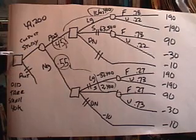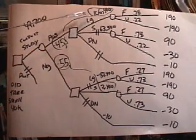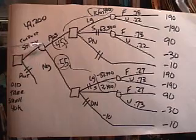So our decision strategy then is go ahead, conduct the study, pay the consultants $10,000, get the results, and if the results are positive, then go ahead and build a large one. If the results of the study are negative, then we're going to go ahead and build a small one.